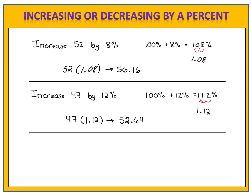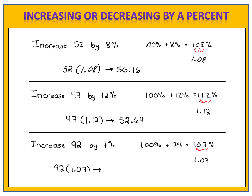Here's one more problem: can you increase 92 by 7%? If we're increasing by 7%, it means we have 100% of what we started with plus 7% more — a total of 107%. Convert that to a decimal and we have the multiplier 1.07. Take 92 times 1.07, and we find the result of 98.44.